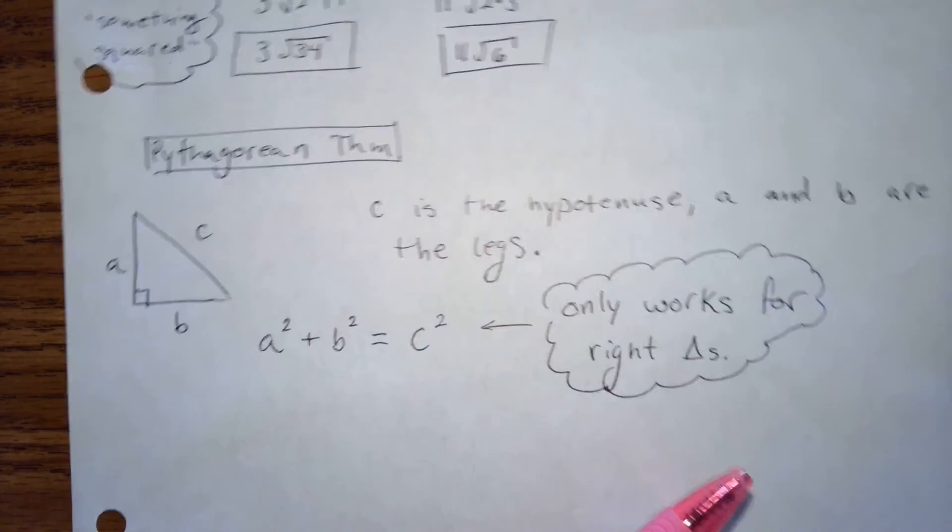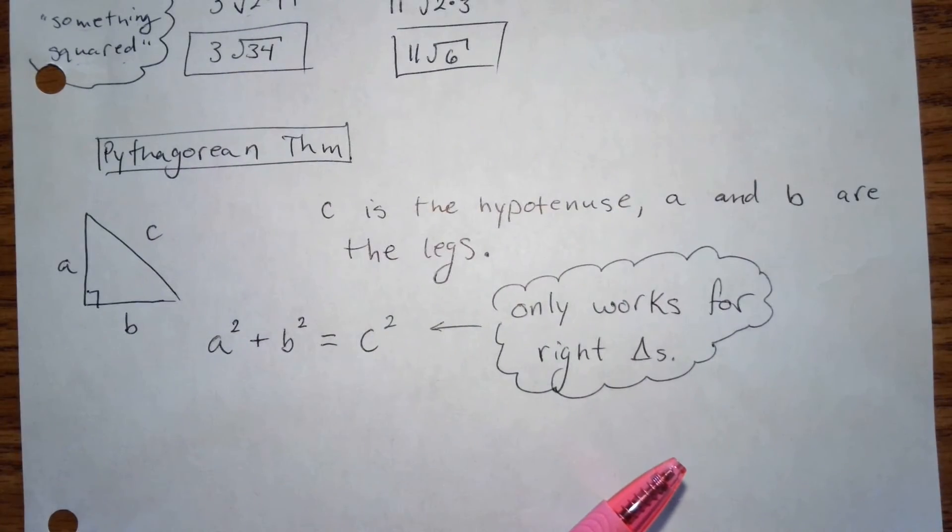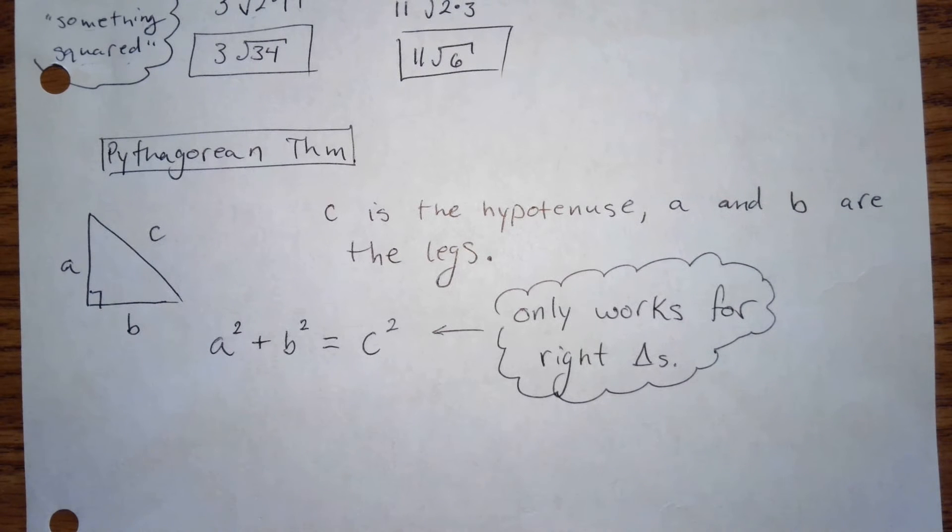Hopefully we remember the Pythagorean theorem. It only works with right triangles. A squared plus B squared equals C squared. A and B are the legs, and they touch the right angle. So the furthest one away, that one's always C. It's always the largest side. So we went over that.